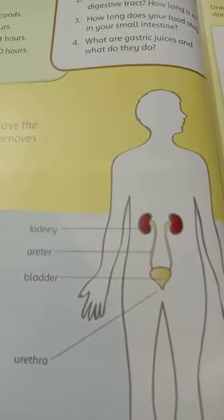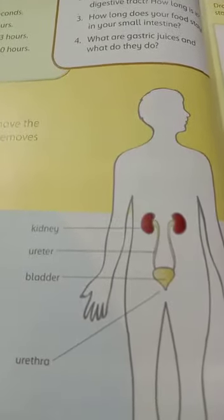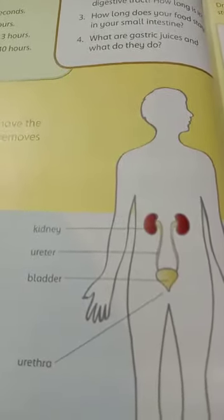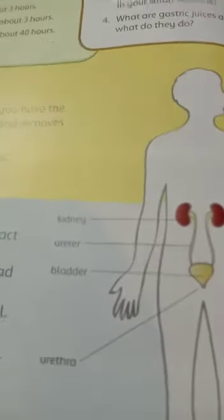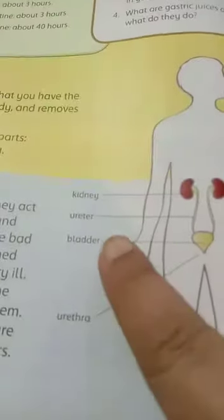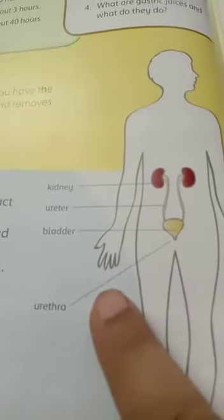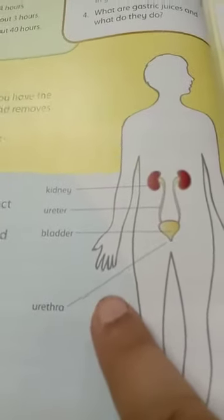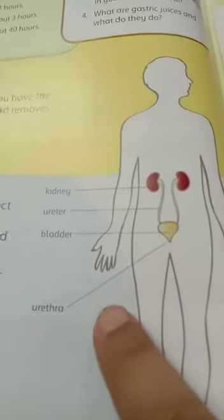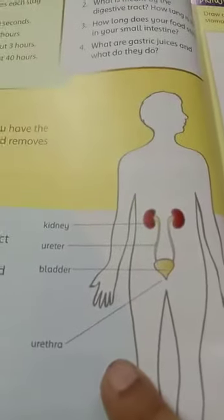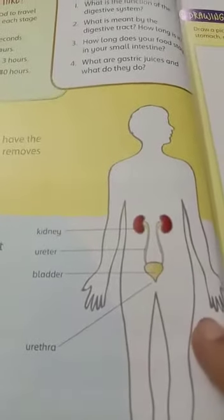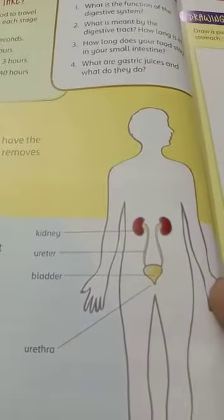These are the two tubes called ureters which run through the kidneys. Then comes the bladder, and then the urethra through which the waste urine is passed out.